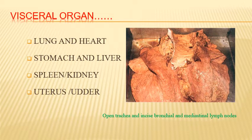Inspection of visceral organs: the most important are lungs and heart. Then stomach, intestine, and liver. Then spleen, kidney, and finally uterus, udder, or sometimes testis and other genital areas. I will explain in tabular form the specific visceral organs, the corresponding lymph nodes, and some important disease conditions expected.